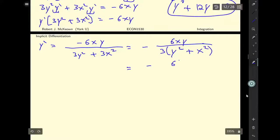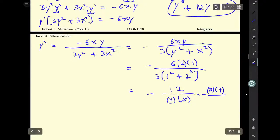We've got negative 6 times 2 times 1 divided by 3 times 1 squared plus 2 squared. This is going to give us negative, we've got a 12 in the numerator. I've got 3 times 5 down here. And 12 is 3 times 4.